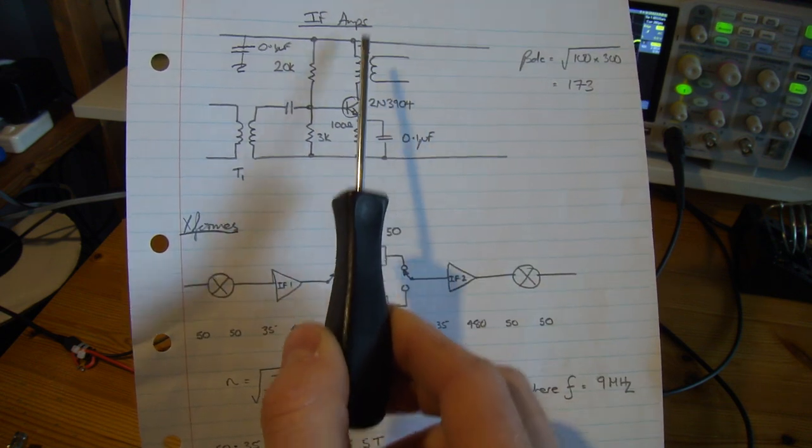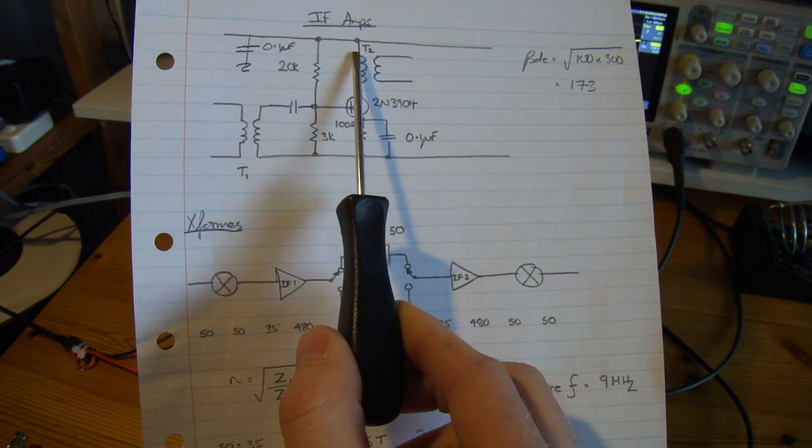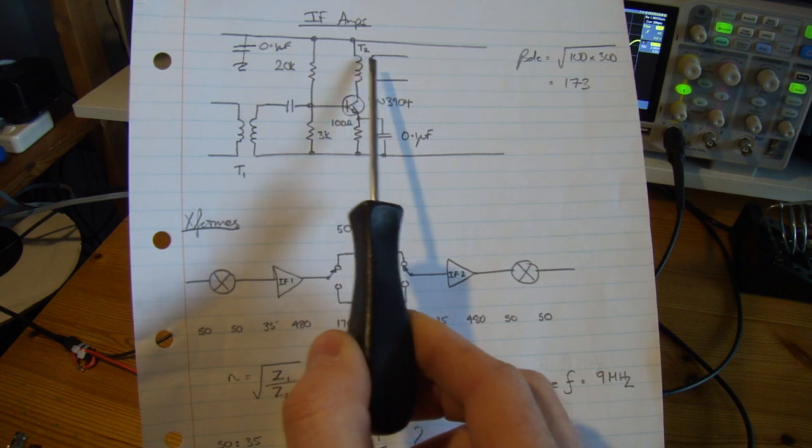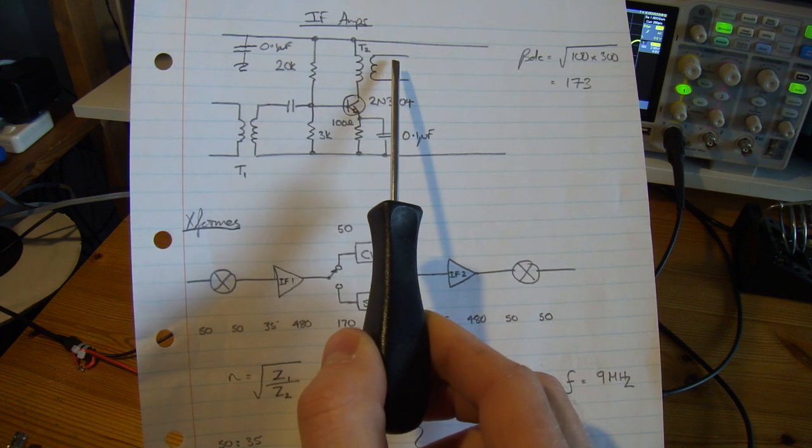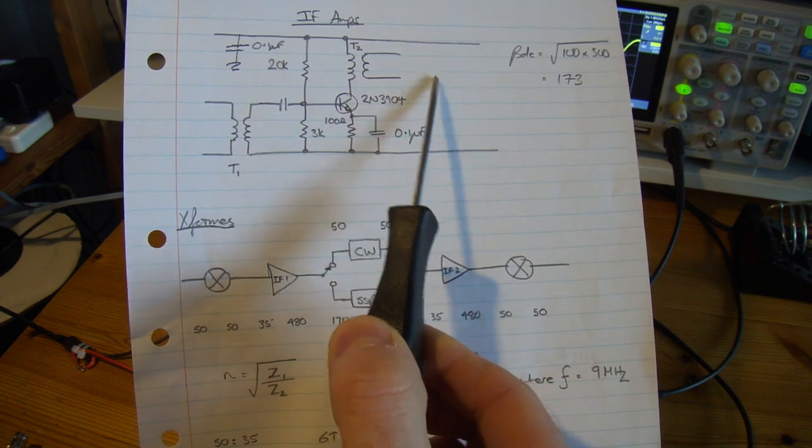Through the process I've just talked about with the IF amplifier, I know that my input is 35 ohms and my output is 480 ohms. I'm now going to remove that radio frequency choke and in here I'll just have a stock standard transformer which will match that 480 ohms through to whatever the load is.